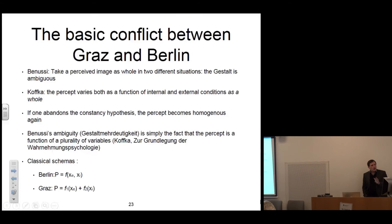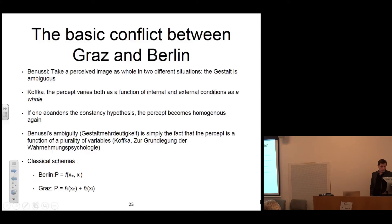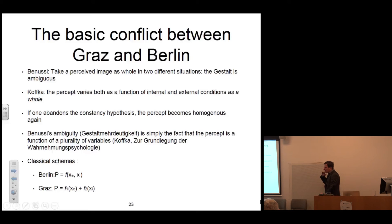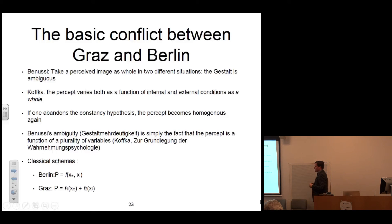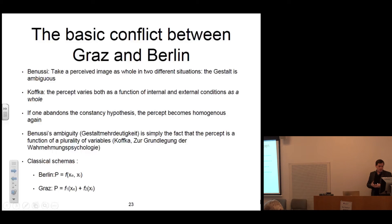The basic conflict could be summarized in this way: for Benussi, if you take a perceived image as a whole in two different situations, then the Gestalt is ambiguous. For Koffka, who goes along with Köhler in this sense, the percept varies both as a function of internal and external conditions as a whole. With these two levels of perception in the Graz school, they are not really interacting. You have the sensory level, which is basically in a strict metaphysical relation of foundation, founding the level of intellectual, emotional, or higher-order acts. But you cannot have an interaction between both these levels — the interaction is not thematized.